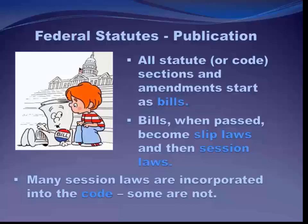After slip laws, statutes are published as session laws — nothing more than the slip laws arranged in chronological order by date of passage, published in separate volumes for each legislative term. Finally, the third form of statutory publication is the code, which is a collection of the statutes currently enforced, arranged by subject rather than chronological order. Codes are much more useful if you're trying to do statutory research on a particular topic, since you can go directly to the subject rather than searching through all the session laws.